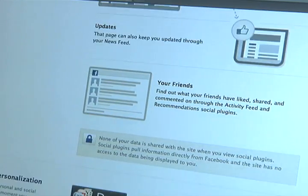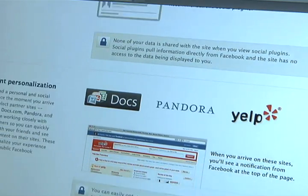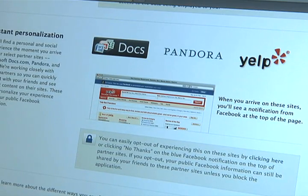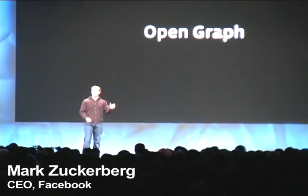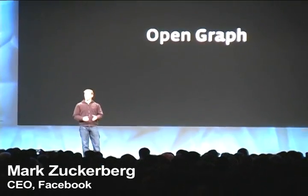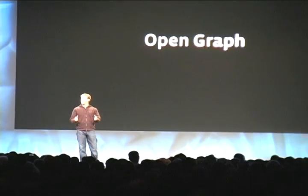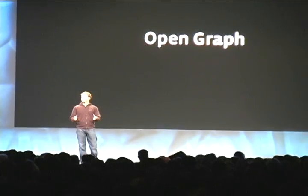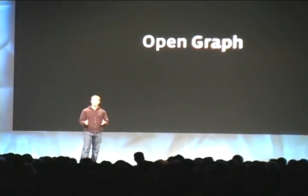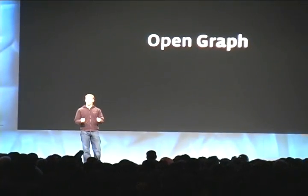For example, if you stated a preference on Facebook for a certain kind of music or food, another site could use that information to highlight certain content. Today, the web exists mostly as a series of unstructured links between pages, and this has been a powerful model, but it's really just the start. The Open Graph puts people at the center of the web.